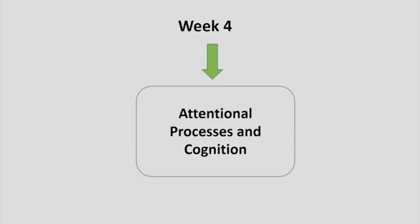In the fourth week, we ventured into the chapter on attention and attentional processes in cognition. Attention is basically focusing yourself and your senses into particular information. We specifically studied selective attention and discussed several theories of selective attention. One theory was the filter theory; we also looked at Treisman's theory of attenuation, the late selection theory, Kahneman's theory, and schema theory. All these theories differ from each other in certain ways.